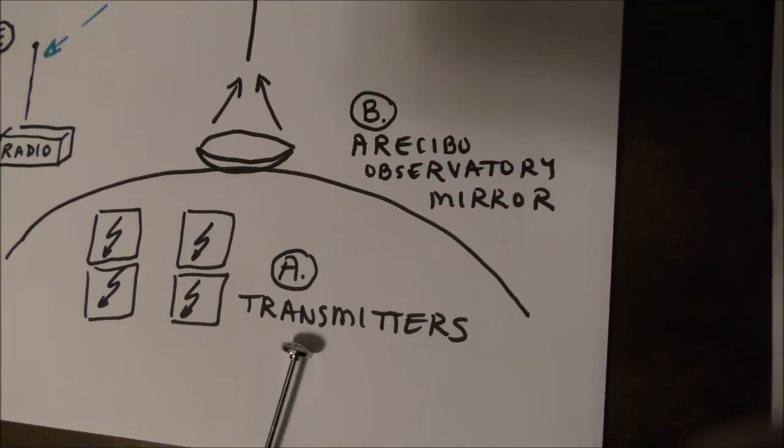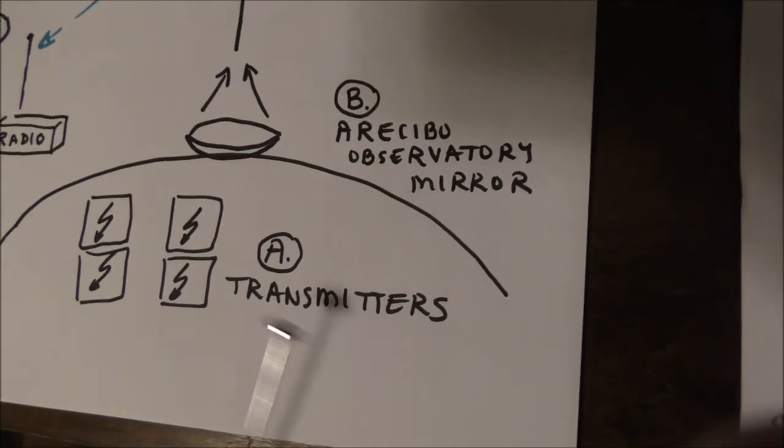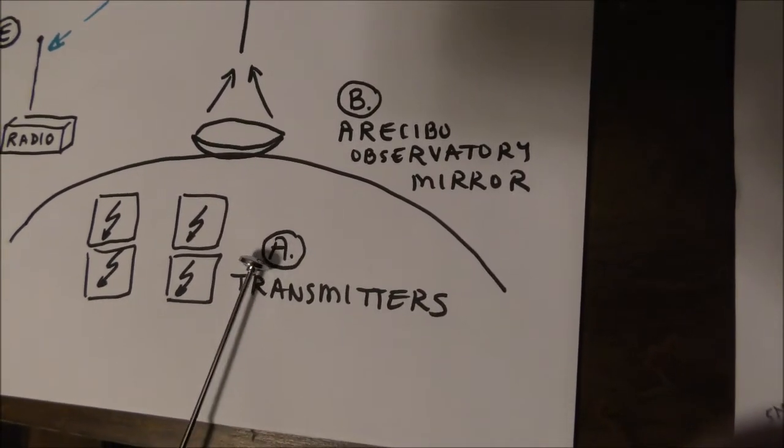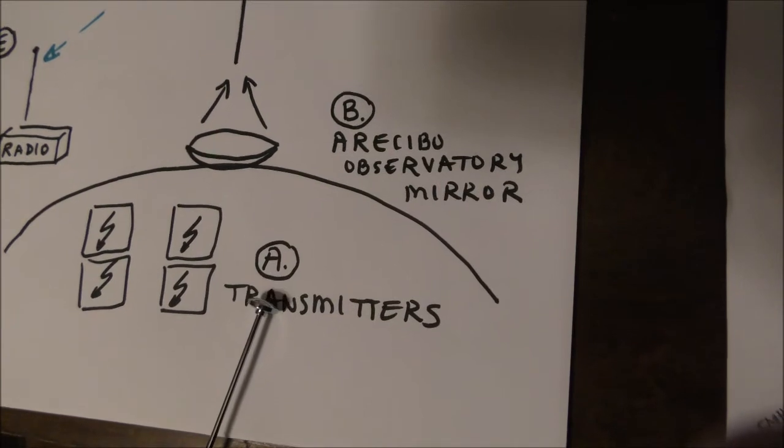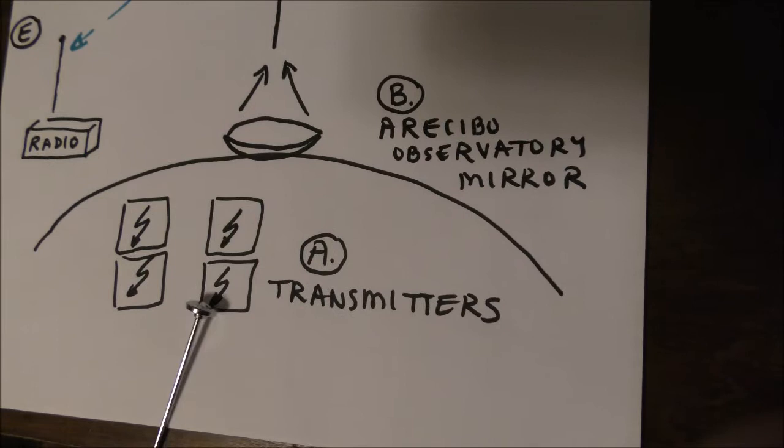At the observatory, there are five powerful shortwave transmitters. The most powerful AM transmitter in the US uses about 50 kilowatts of power, and these are five units running 100 kilowatts each. That's a lot of power.